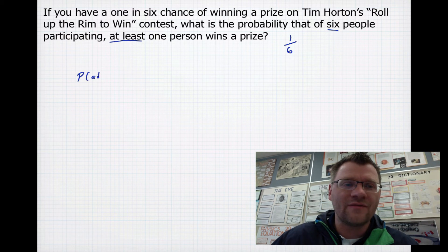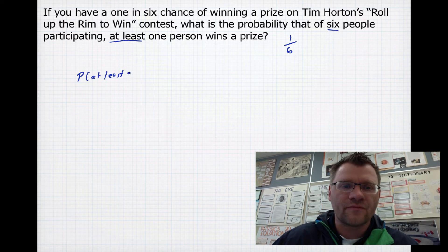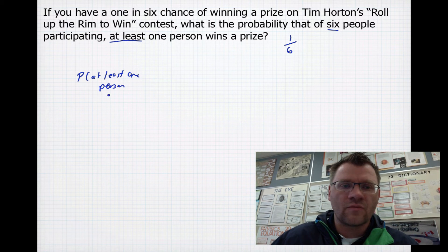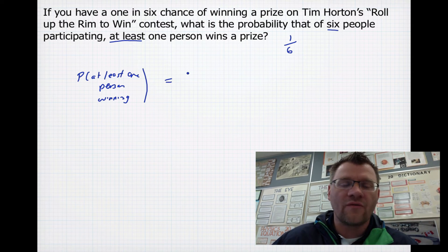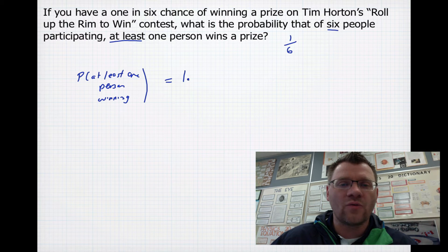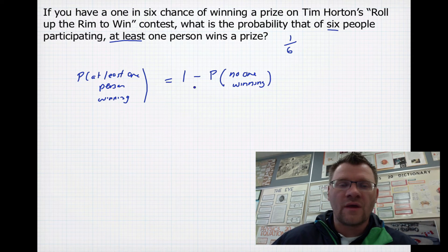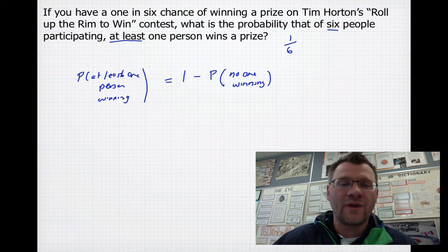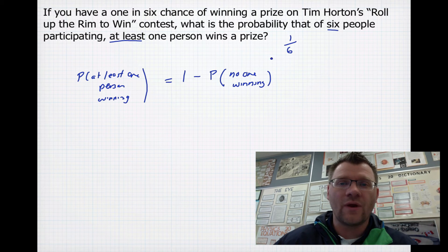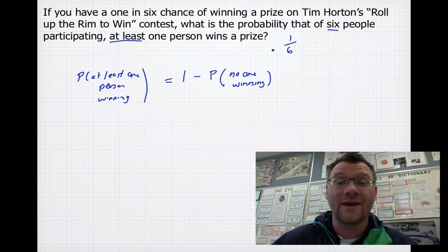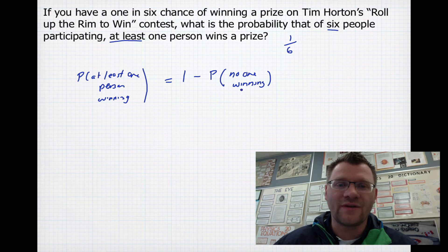So the probability of at least one person winning is actually the opposite of nobody winning. So if it's the opposite of nobody winning, then we take our 1 minus the probability of no one winning. So probably at least one person winning is 1 minus the probability of no one winning at all. Well, if you have a 1 in 6 chance of winning Tim Horton's Roll Up the Rim to Win, that means you have a 5 in 6 chance of not winning or losing that contest.